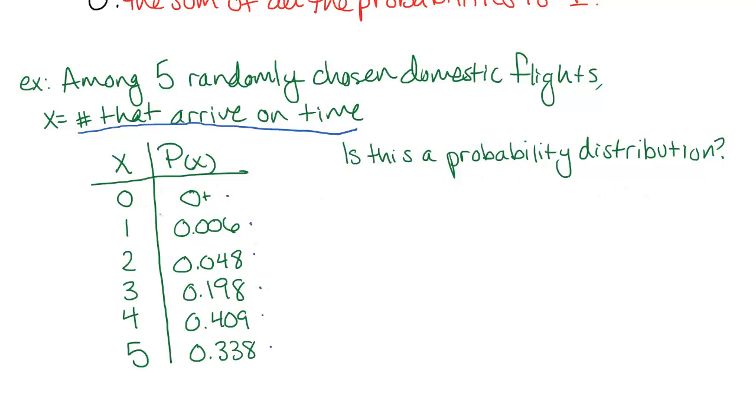Well, it looks like it, but we have to check our three requirements. So the first is, is X actually a random variable? Well, it is. If we actually looked at five flights, we would definitely be able to determine for sure which one of these outcomes we got. And this is a numerical value.